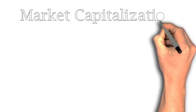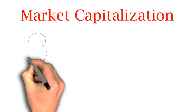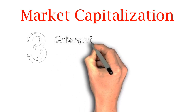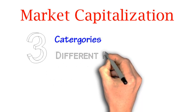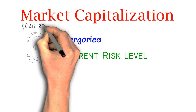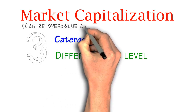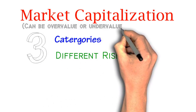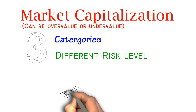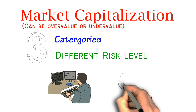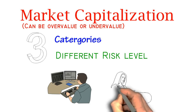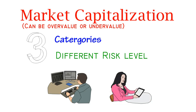In conclusion, market cap can be divided into three categories associated with three different risk levels. Always remember that the market cap can be undervalued or overvalued. We have to set our goal and analyze the market conditions when choosing a stock. Also, don't forget to understand the risk of the stock you choose.